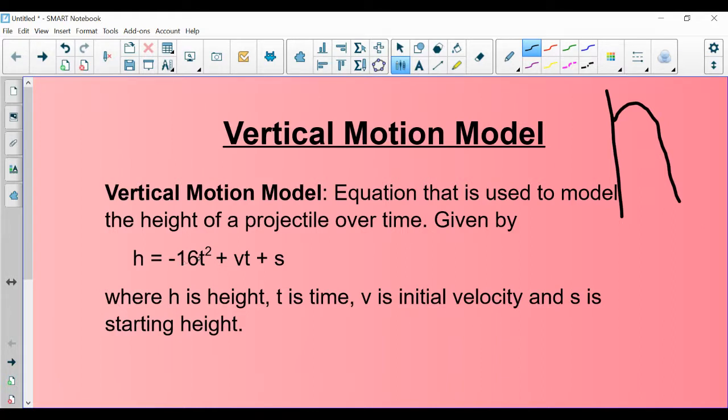H equals negative 16 T squared plus VT plus S. H is going to be the height. Height is going to be changing. T is time, that's the X variable. It's going to be over here.